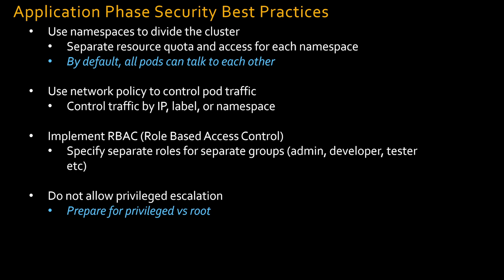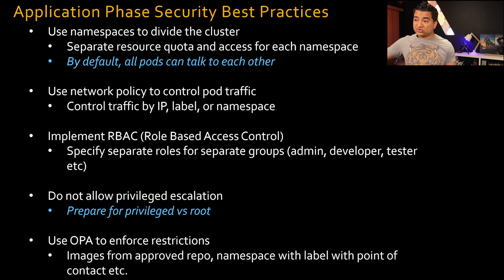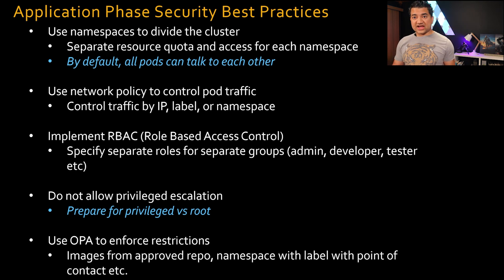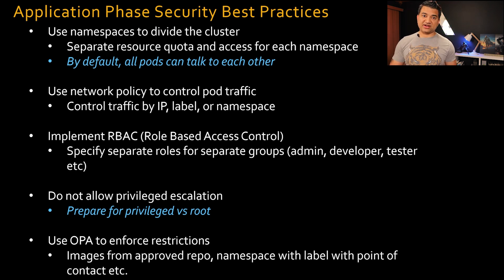We've talked about a lot of best practices — but is there a way to declare all of this using some sort of policy engine? Yes, which brings us to the next best practice: use OPA (Open Policy Agent) to enforce restrictions. Using OPA, you can ensure container images only come from approved repositories, or enforce that every namespace has a label with a point of contact, etc. You might get an interview question on how to implement OPA — you do that using either Gatekeeper, an open source project based on the Rego syntax programming language, or Kyverno, which is based on YAML. Kyverno is getting a lot of traction, but keep both names in mind.